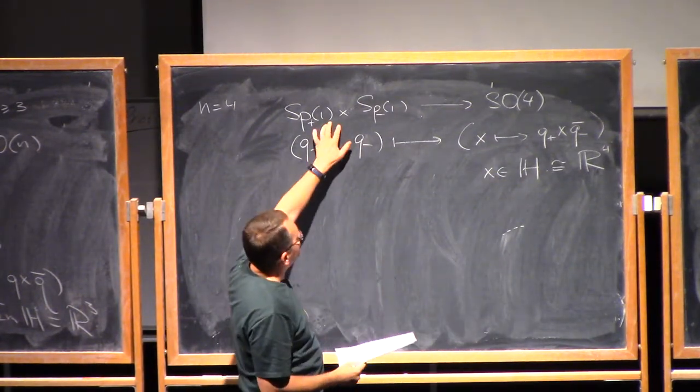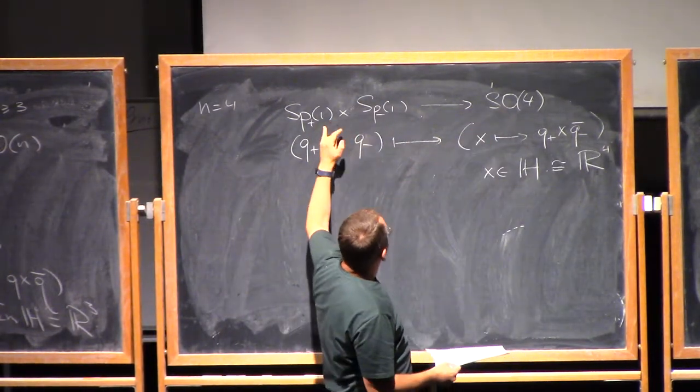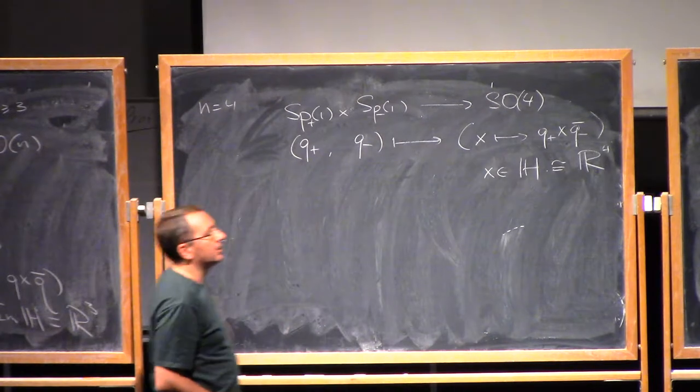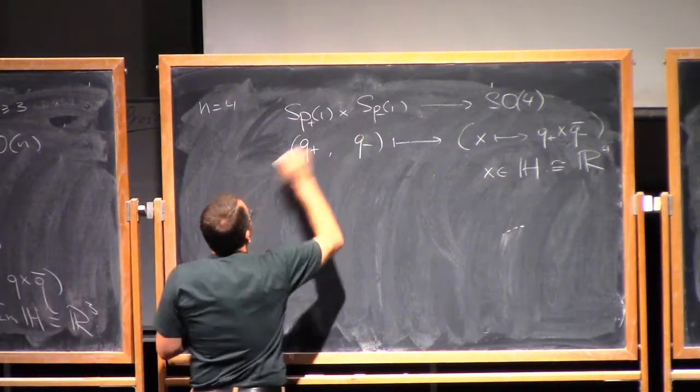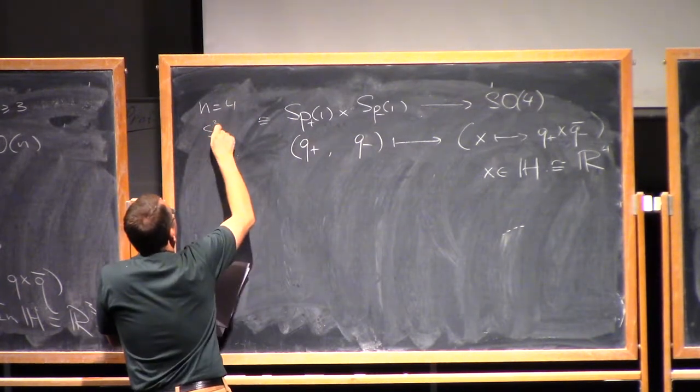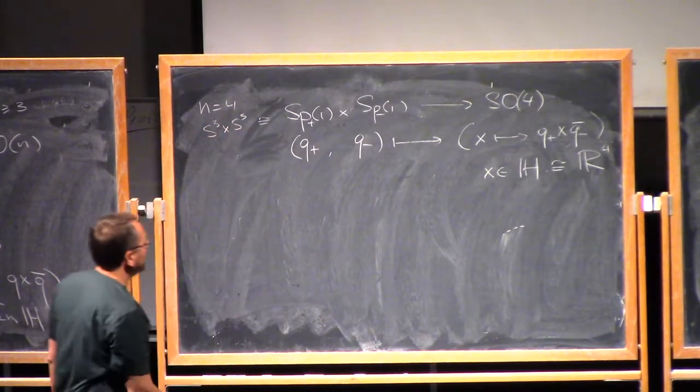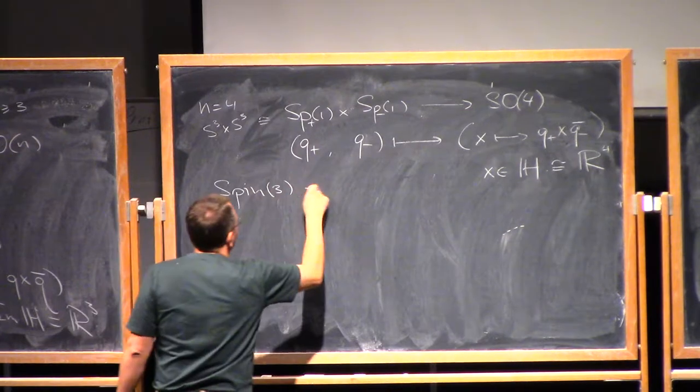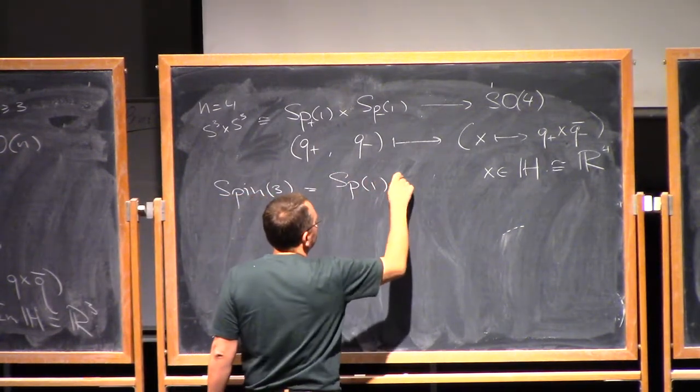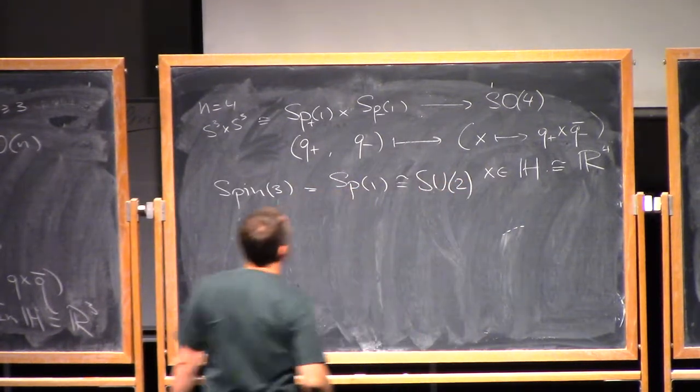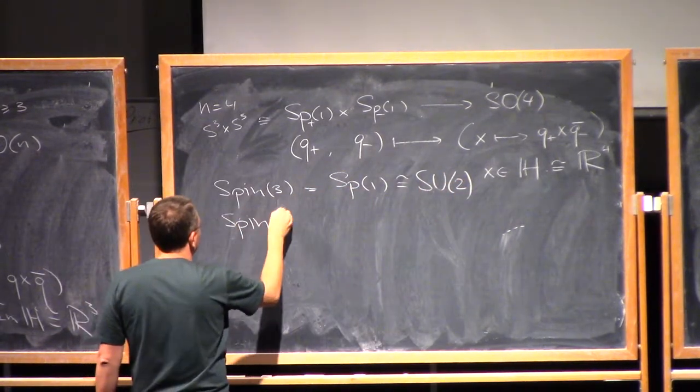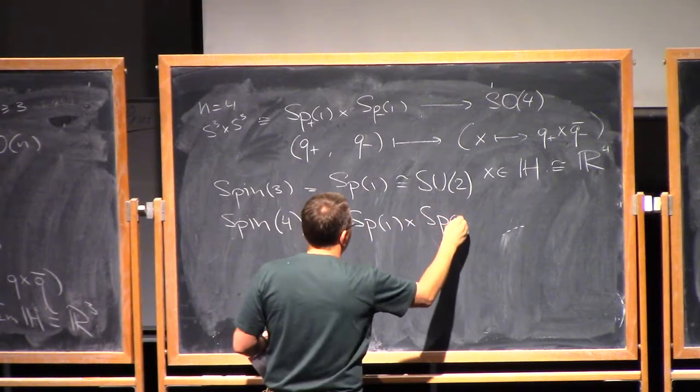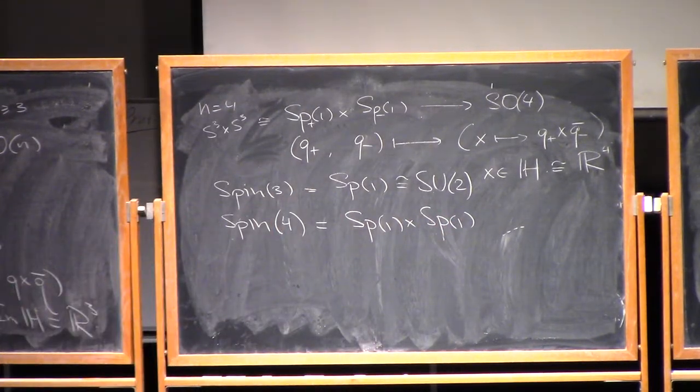All right. So, we have a map from this group into SO4. And minus 1, minus 1, so the diagonal minus 1, goes clearly to the identity element. So, again, this is a map 2 to 1. And therefore, and this is, again, simply connected, right? So, this is just, topologically, S3 cross S3. In other words, so what we have shown is that the group spin 3 is SP1, and this is just the same as SU2. And the group spin 4 is SP1 times SP1. Well, that's fairly concrete.